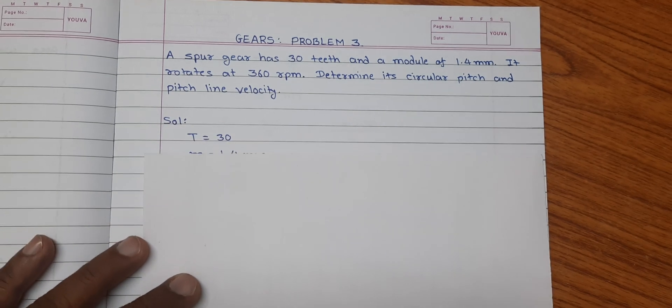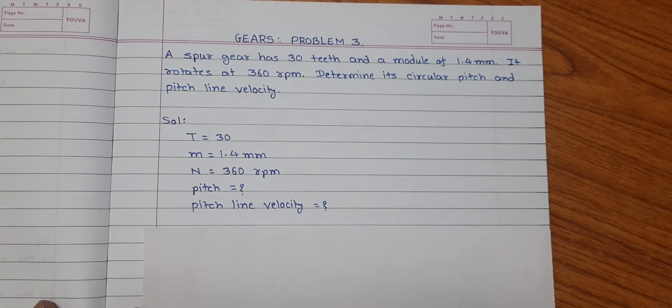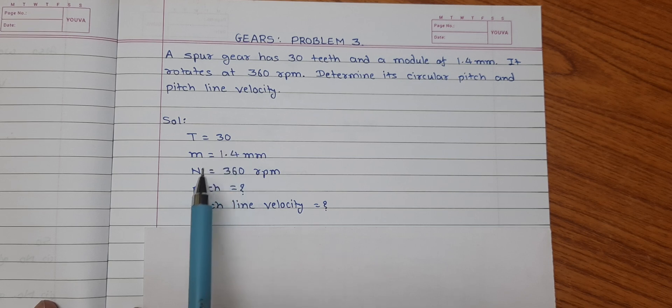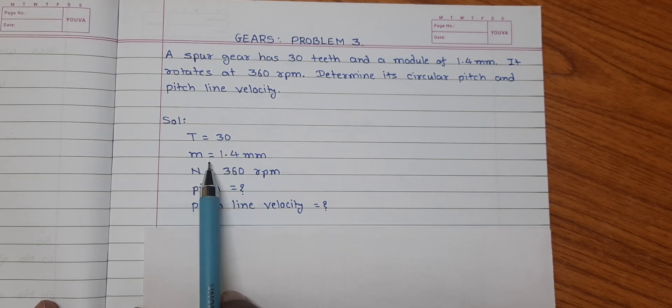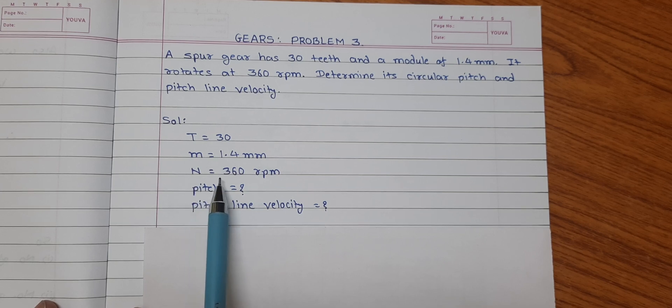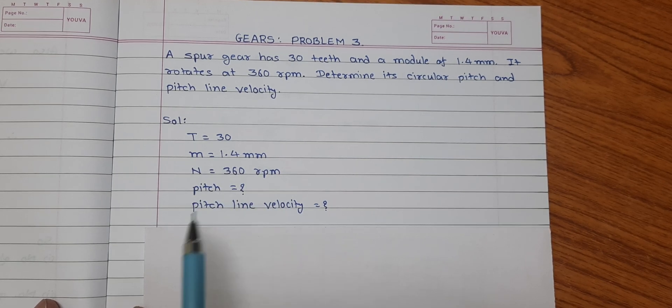Friends, let us note down the given information. Here it has been given that number of teeth of gear t is equal to 30. Module of the gear m is given 1.4 mm. The speed of the gear is given n is equal to 360 rpm. We have to calculate pitch and pitch line velocity.